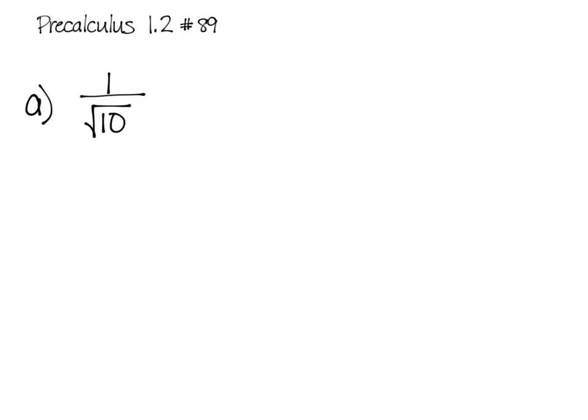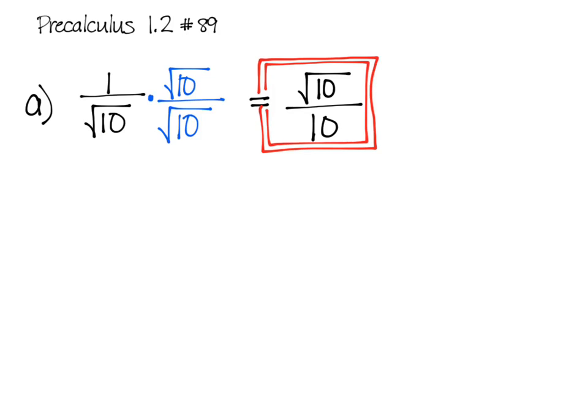Since our denominator is the square root of 10, we know that we need to multiply by the square root of 10 over the square root of 10. This is just a fancy way of saying 1, and because when you multiply those denominators, you will get a rational number of 10, the final answer.